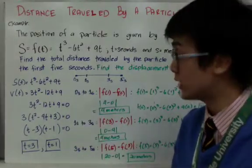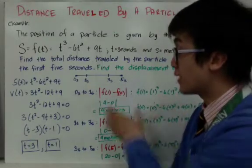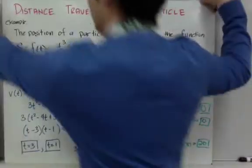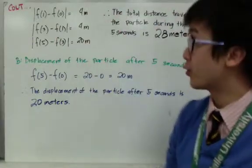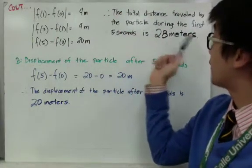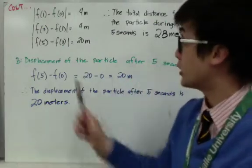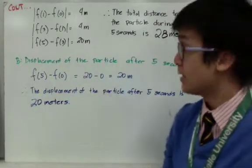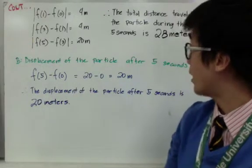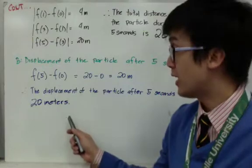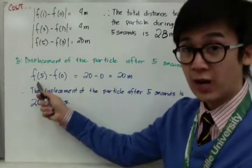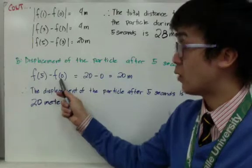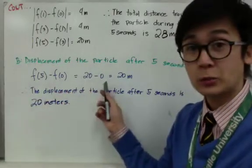To find the total distance traveled, add the three interval distances: 4 plus 4 plus 20 equals 28 meters. So the total distance traveled by the particle during the first five seconds is 28 meters. For the displacement after five seconds, simply compute f(5) minus f(0), which gives 20 minus 0 equals 20 meters.